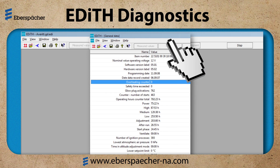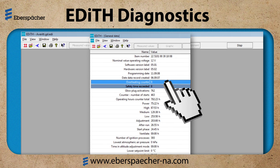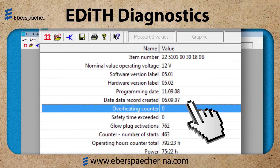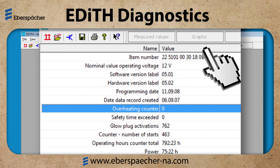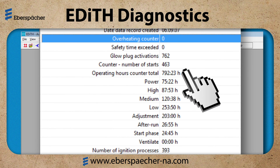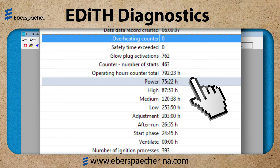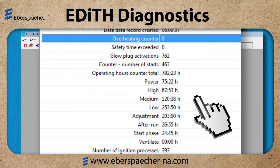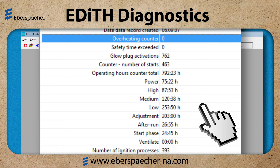Next, select the general data tab. This tab will show the overheat counter, safety time exceeded count, and the operating hours. The information above the overheat counter is related to the heater ECU and programming; it does not reference the heater serial number. Our screen is referencing an Airtronic heater. Total hours is 792 hours and 23 minutes. The breakdown is power at 75, high at 87, medium at 120, and low at 253. This heater has operated about 30% of the time in low. If the low percentage is 50% or more, it is indicating that the heater is not working very hard — it needs to run more in the higher levels to stay clean burning, or the heater is too large for the application.